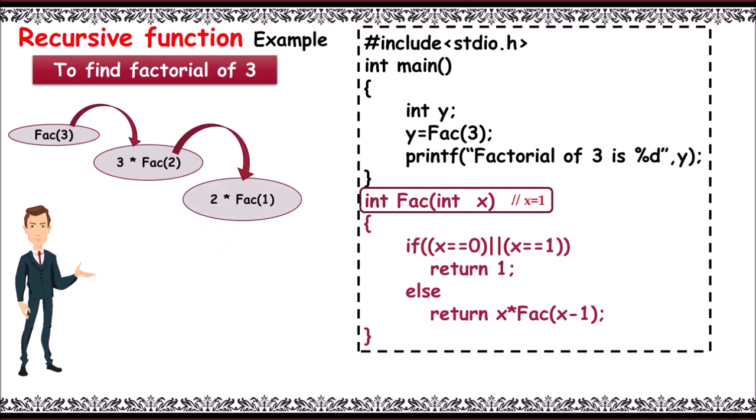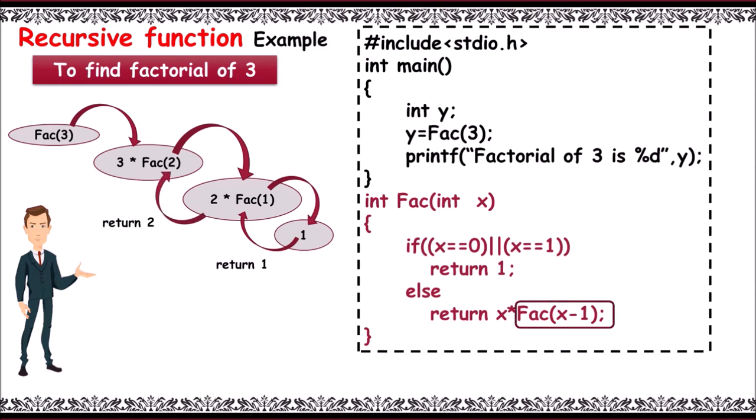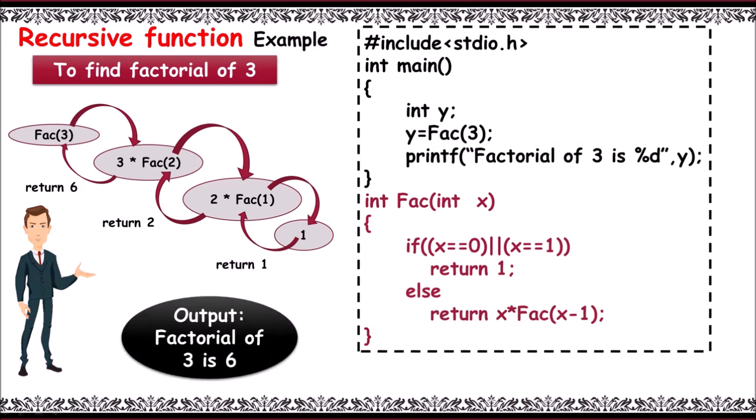Then fact of 1 function is called with x is equal to 1. Now function begins. 1 double equal to 1 condition is true. Value 1 is returned to the function call. Fact of 1 is replaced with 1, and function 2 into 1 is written to function call fact of 2 with value 2. Then 3 into fact of 2, that is 3 into 2, is computed. 6 is written to main function, fact of 3, and is stored as y. Y is equal to 6. Now it prints output as factorial of 3 is 6.